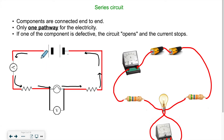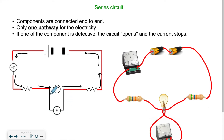In a series circuit example, the current flows from the positive end of the power source, through an ammeter, through a resistor, through a light bulb, through another resistor, and back to the power source. The voltmeter is connected on either end of the light bulb — it measures the voltage before and after the current goes through the light bulb, so it's connected to both ends but isn't directly part of the loop.